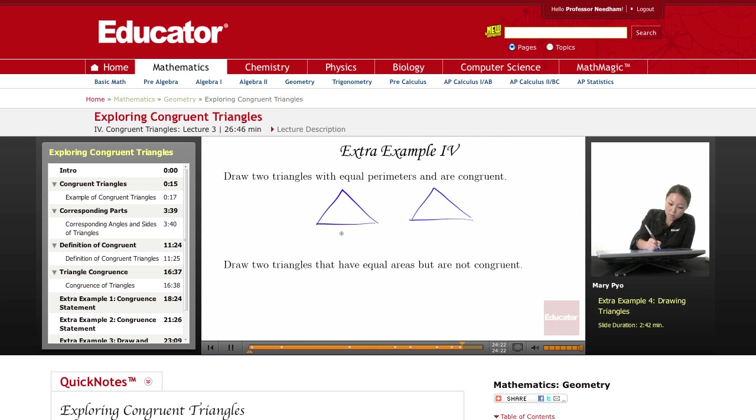So if I said this is 4, 5, 6, then this also has to be 4, 5, 6, right? Because they're going to be congruent.